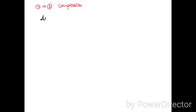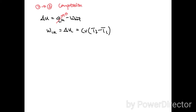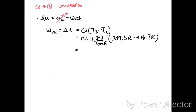From one to two is compression. The process is isentropic and adiabatic, so Q_in equals zero. Therefore the work going in equals delta U, which equals cv(T2 − T1). Substituting the known values, the work input during compression equals 144.12 BTU per pound mass of air.